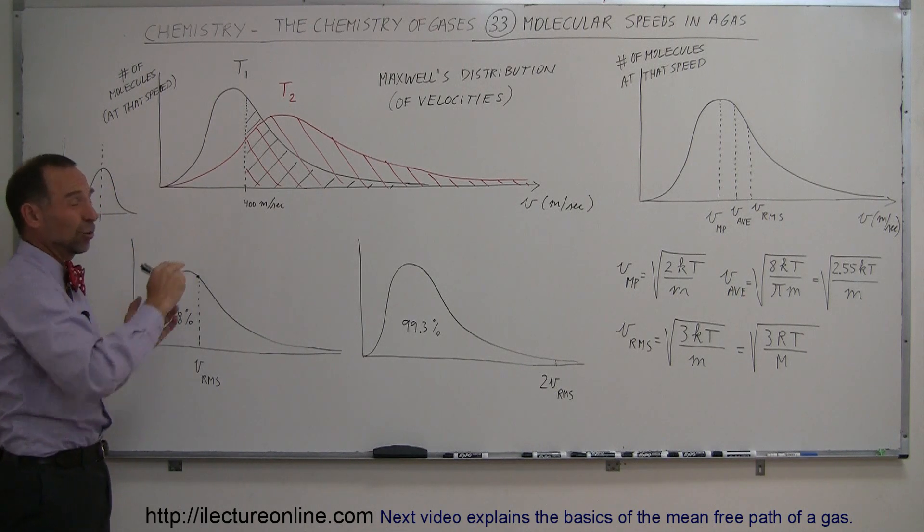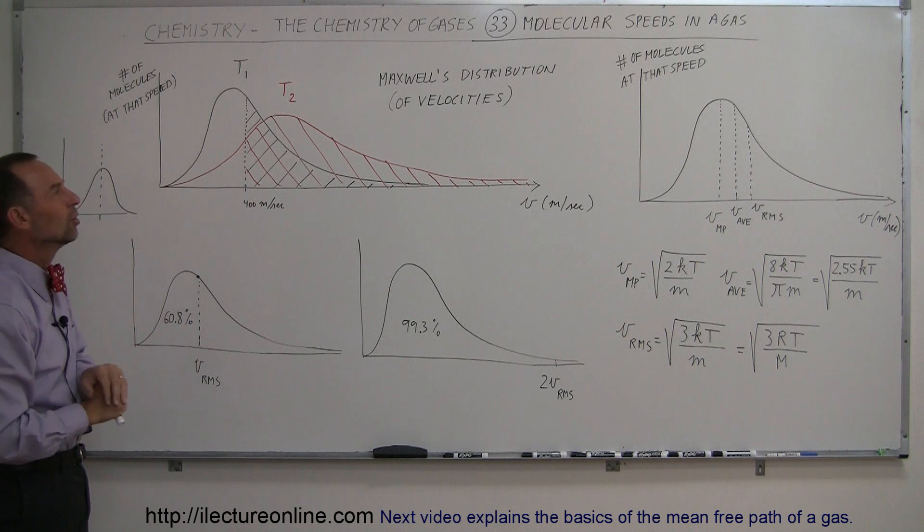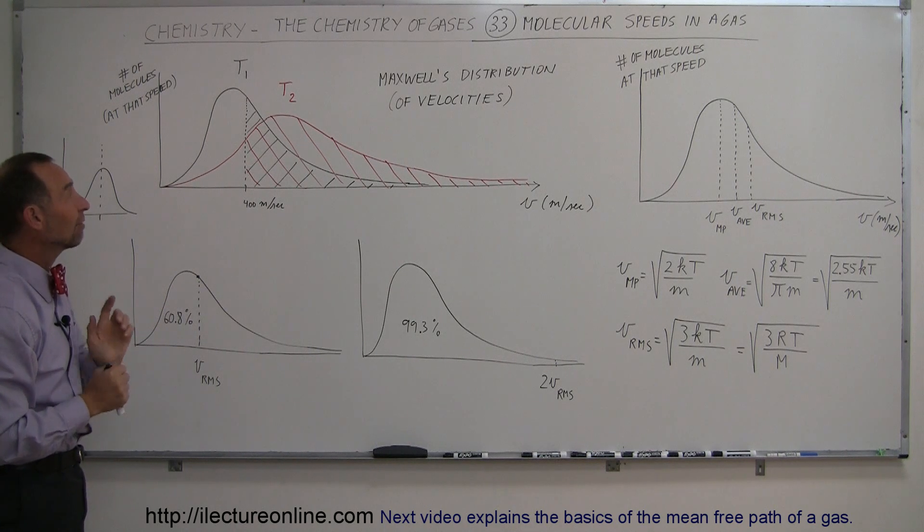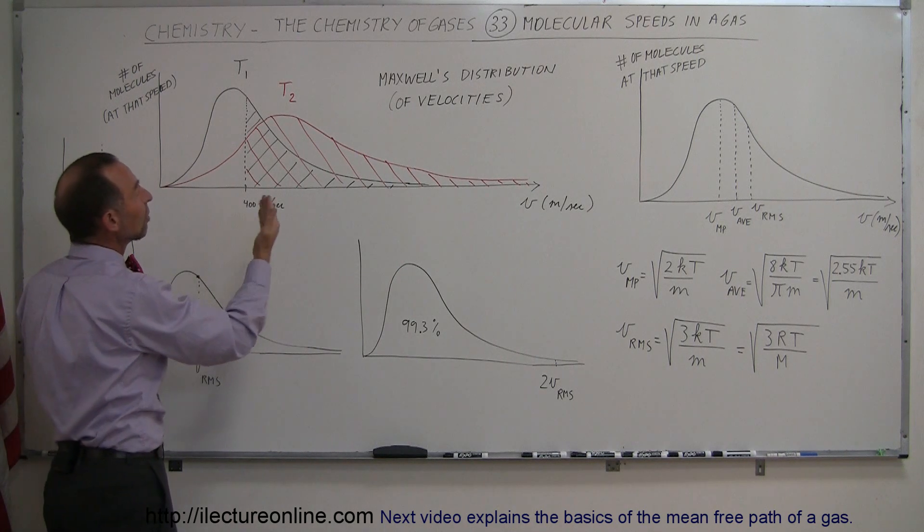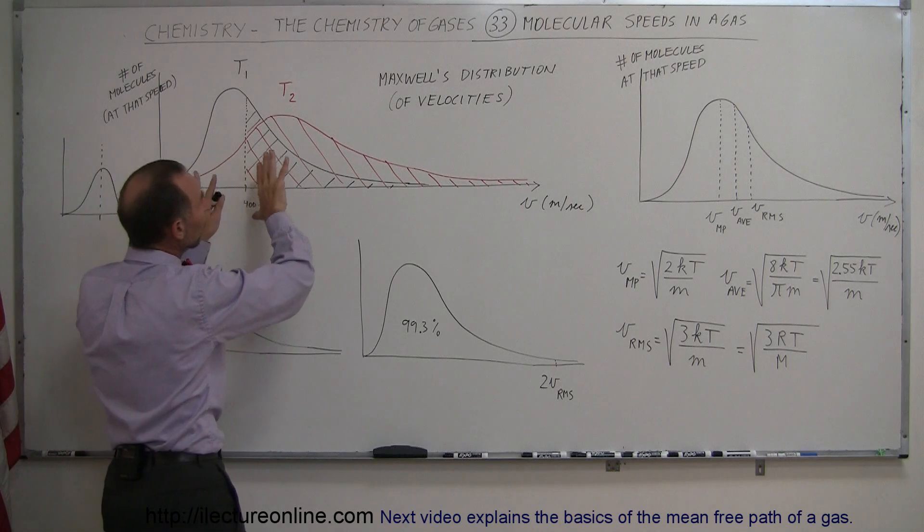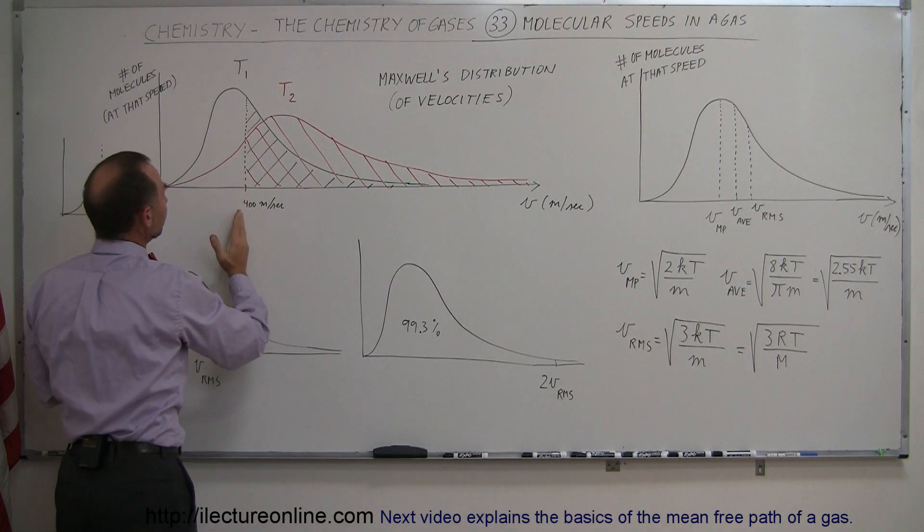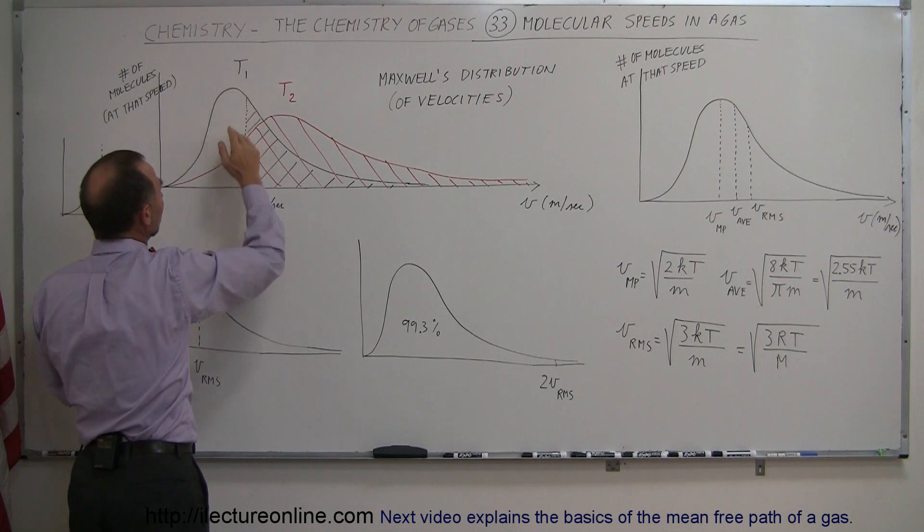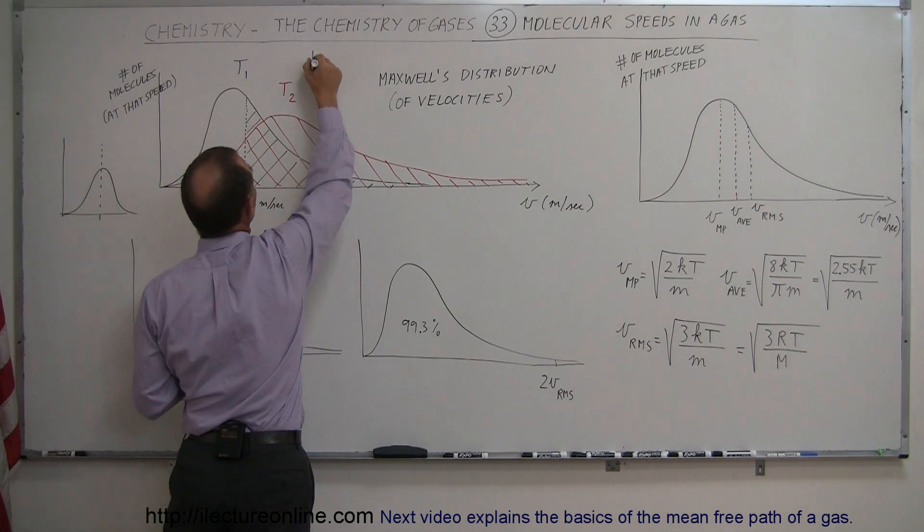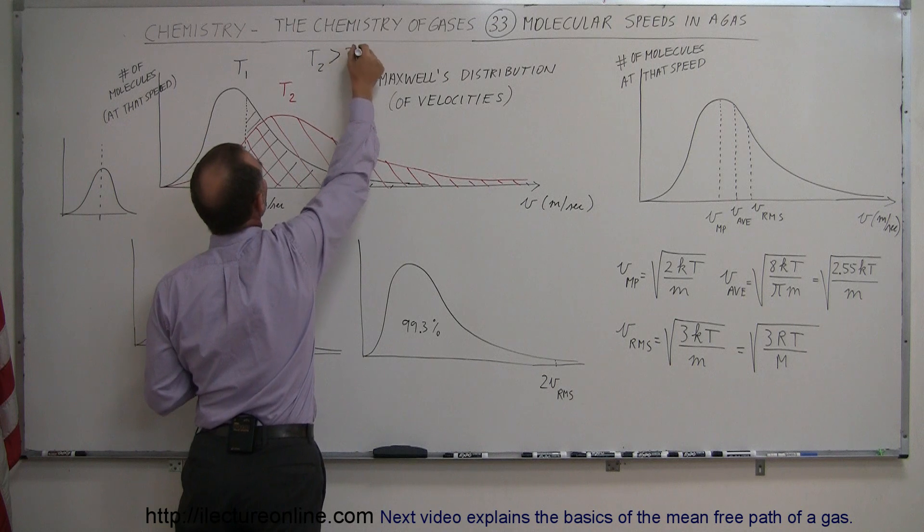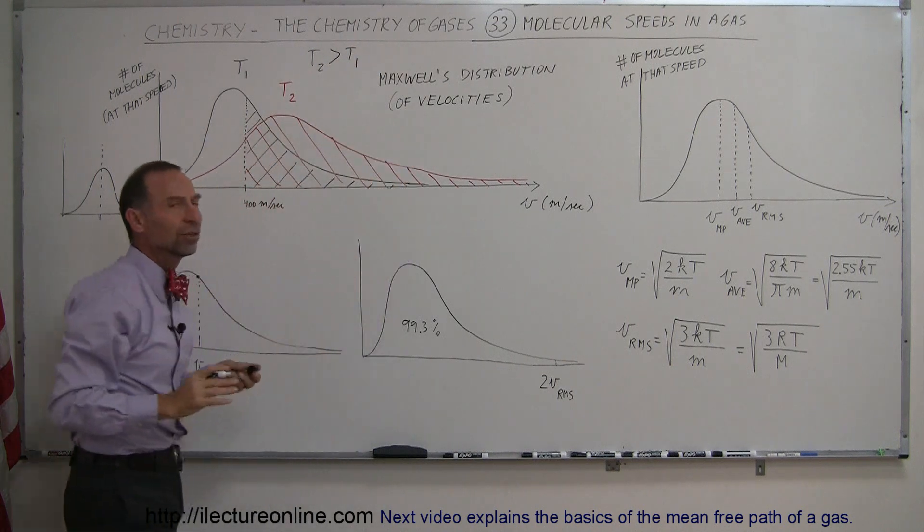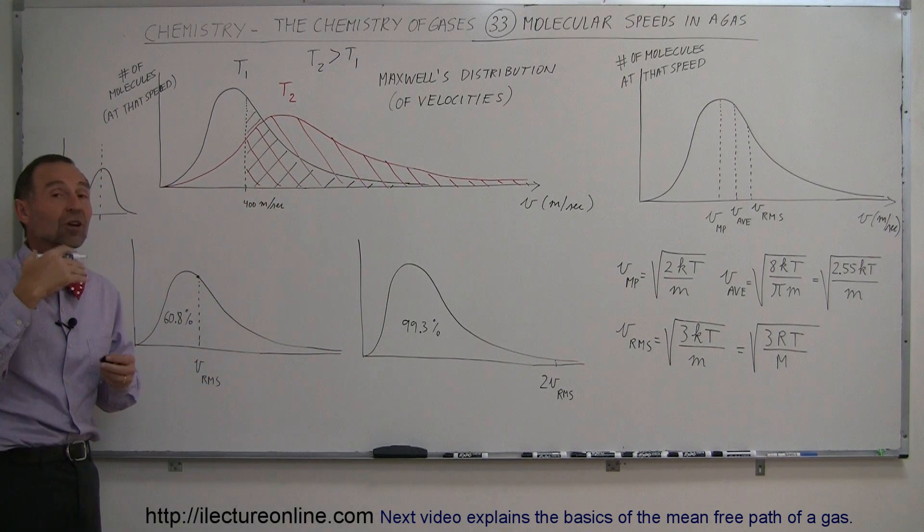The equation that describes that curve is quite complicated. We don't need to go into the details here. What you do have to realize is that if we increase the temperature of a gas, it shifts the velocities of the molecules to the right. Notice that in the case where T2 is larger than T1, the distribution for T2 represents a gas that's at a much higher temperature.